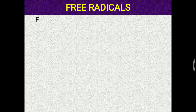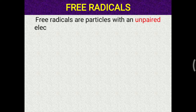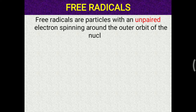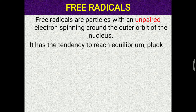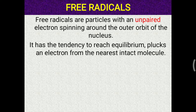Free radicals are particles with an unpaired electron spinning around the outer orbit of the nucleus. Normally, paired electrons move around the nucleus, but if unpaired, this unpaired electron has the tendency to breach equilibrium and will pull an electron from the nearest intact molecule.